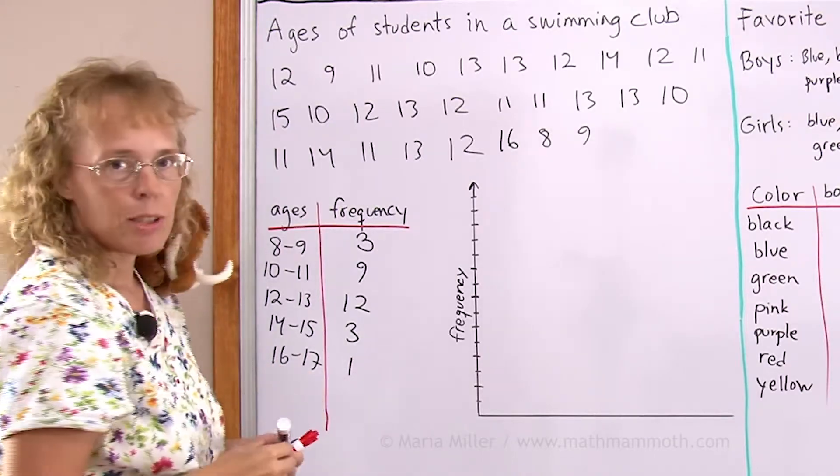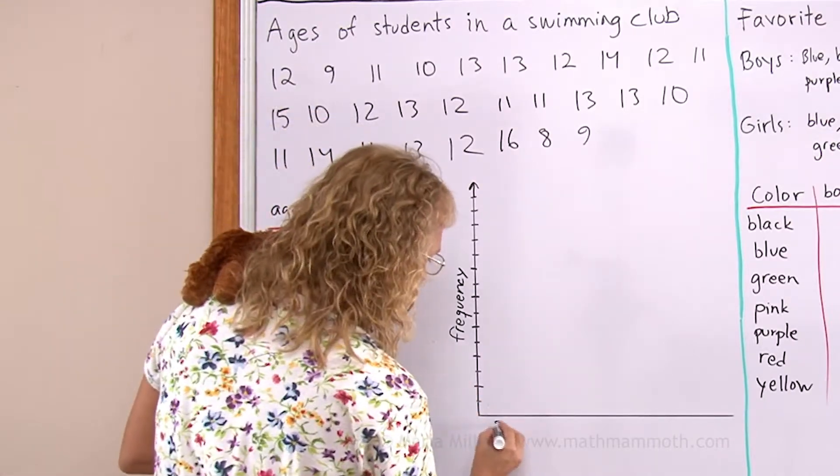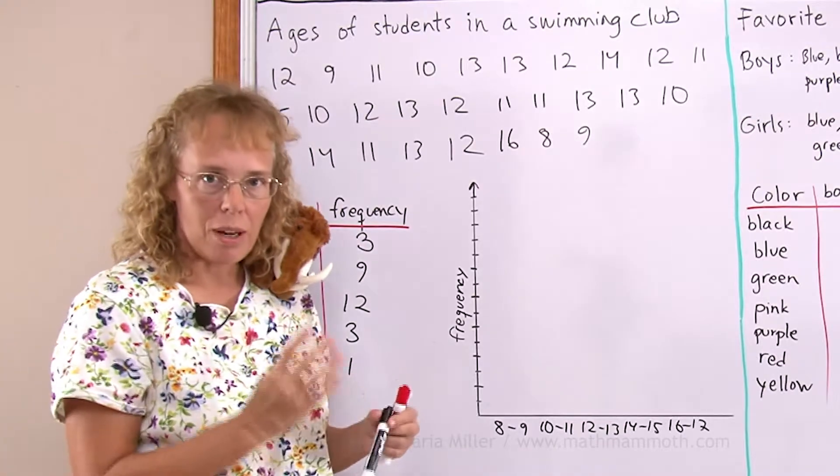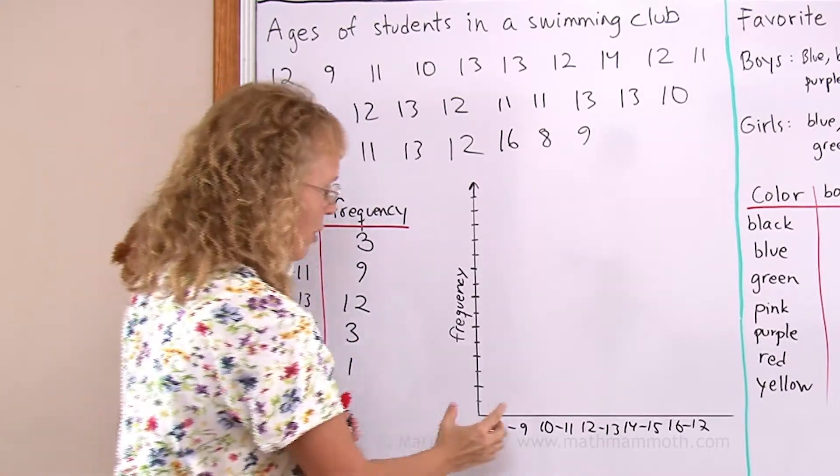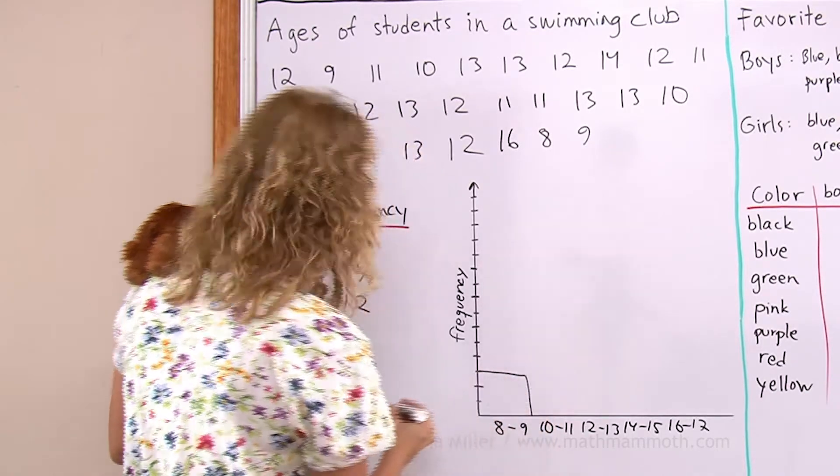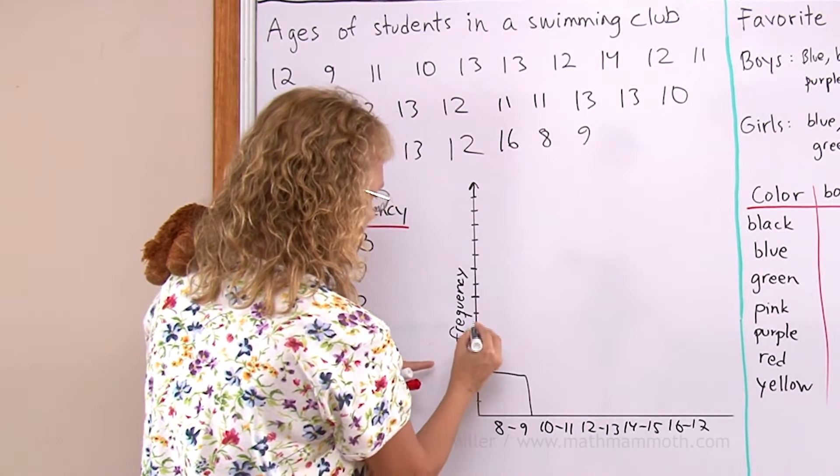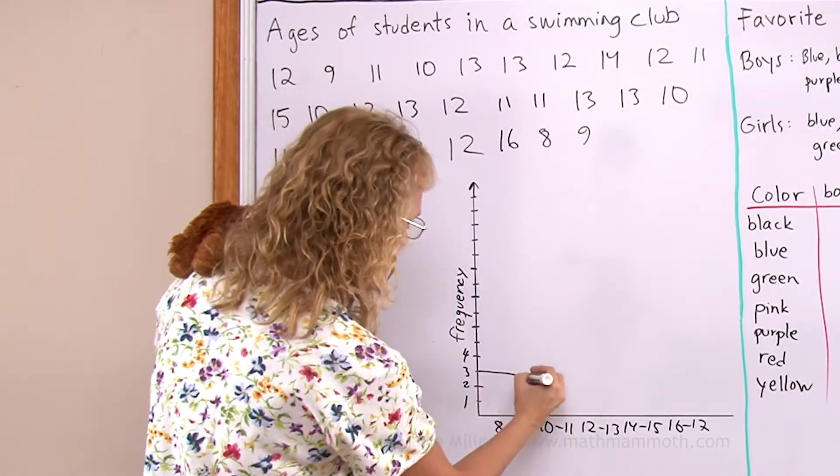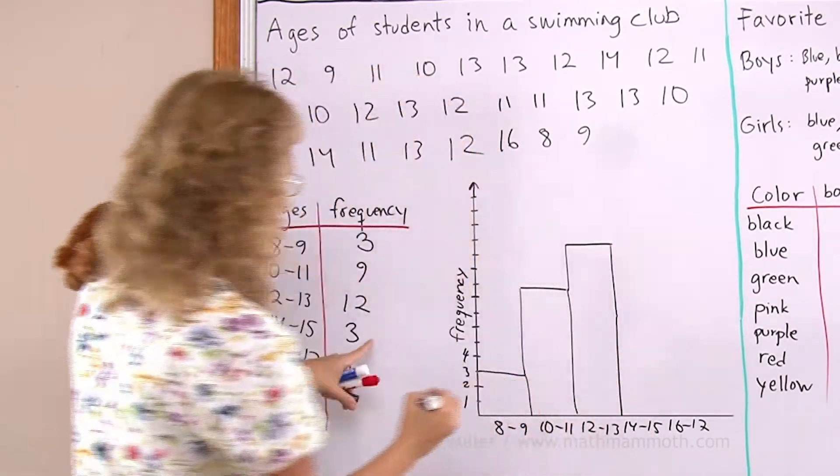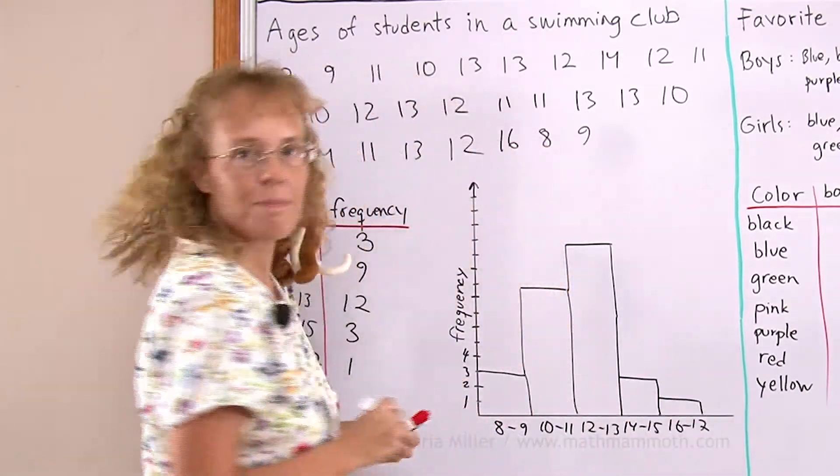And now we're ready to draw the graph itself, the histogram. I'll put the bins here. And this time when we draw the bars, they need to be touching. 8 to 9, it will be 3 high over here, then 9 high. I have 1, 2, 3, 4, 5, 6, 7, 8, 9 over here. Next one is 12 high, then 3 high over here, then 1. And that is a histogram.